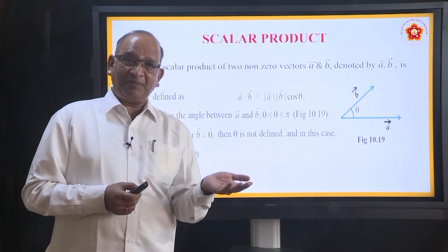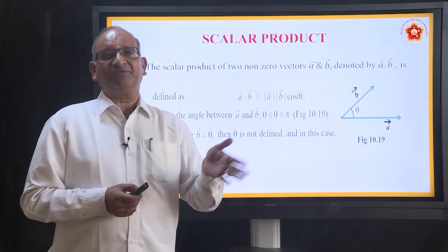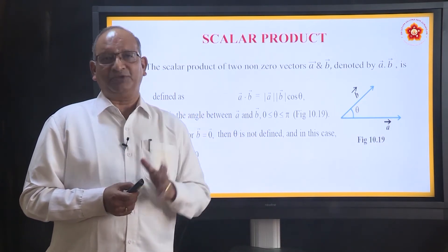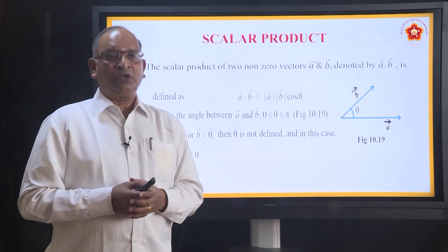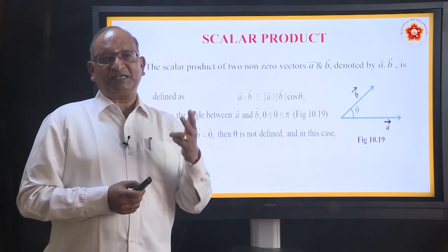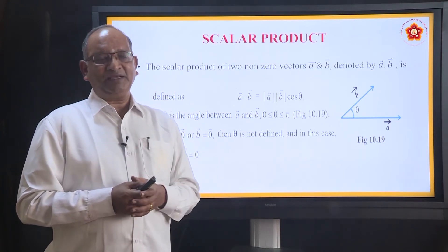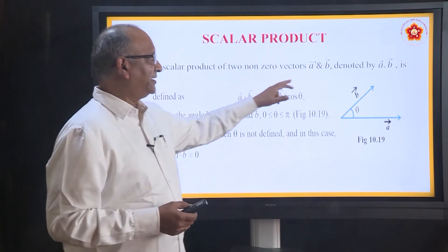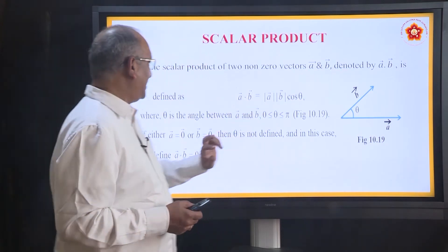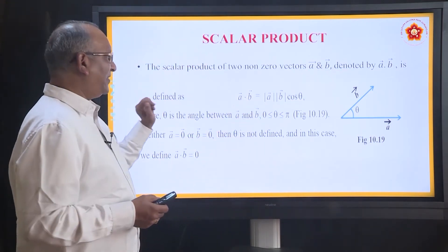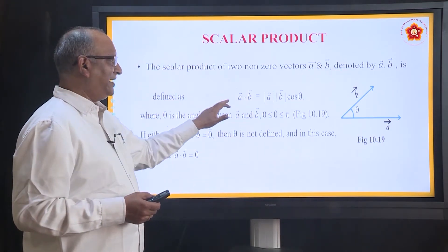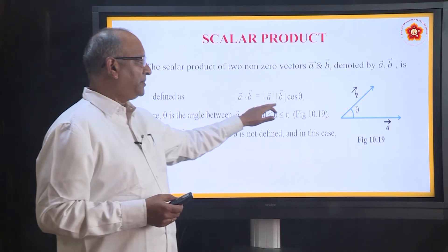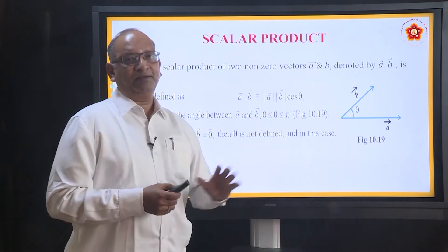Because if one of them is zero, the product will become zero — zero into anything is zero. So the two vectors which we are taking are non-zero vectors, denoted by vector A and vector B, and is defined as A dot B is equal to AB cos theta.